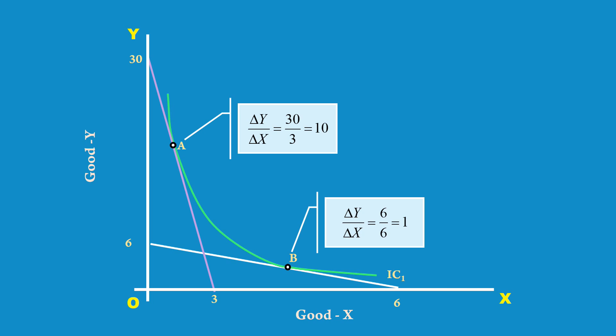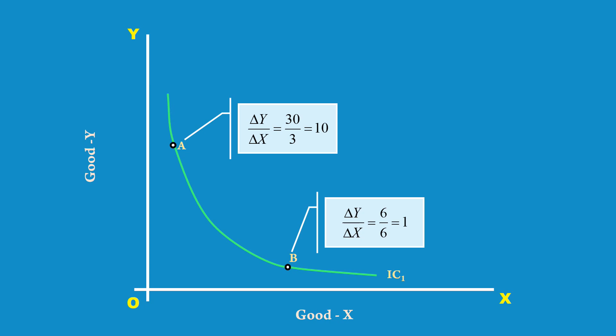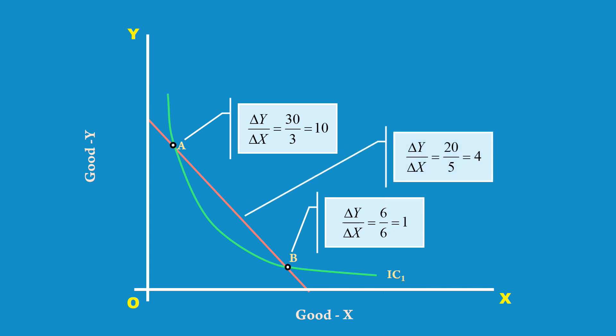The interpretation is that the consumer is willing to offer 1 unit of good Y in exchange for 1 unit of good X. Thus, the marginal rate of substitution of X for Y falls as the consumer moves from the top left to the bottom right of an indifference curve. Now, I remove the tangents to reduce complexity and integrate the price line into this graph. The slope of the price line at any point is 4.